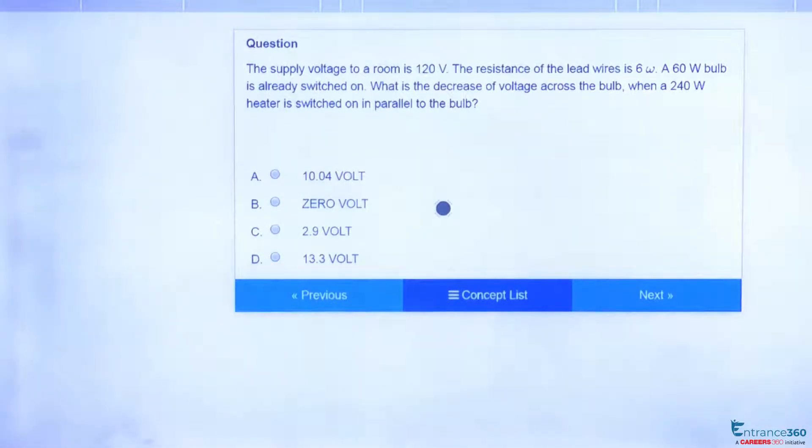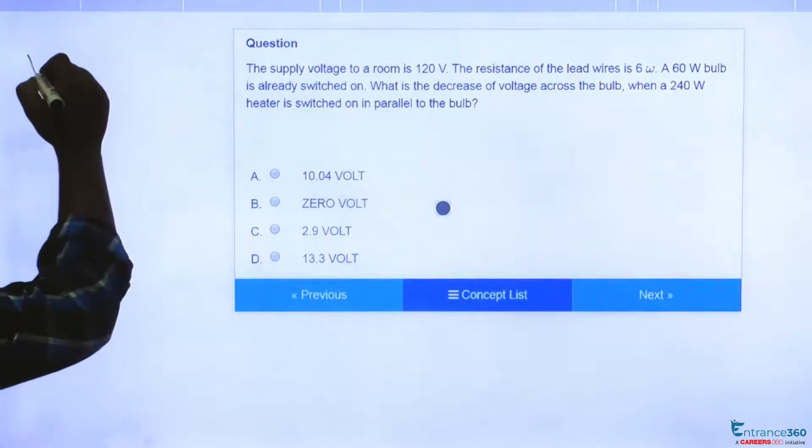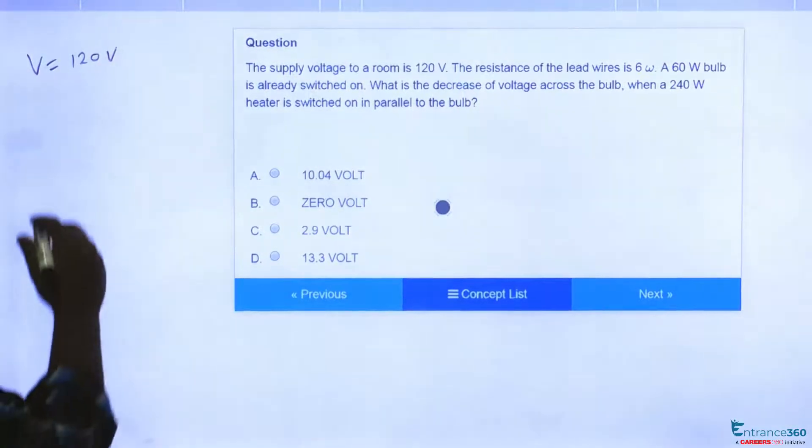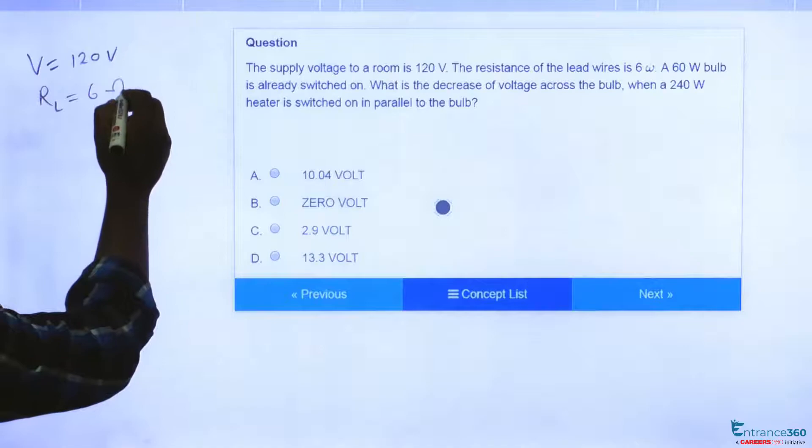Hello students, let's try to solve this question. This question was asked in JEE Main 2013 and is from the chapter electrostatics. The question says we have a supply voltage of V equal to 120 volt and the resistance of lead wire, let's suppose RL is given as 6 ohm.